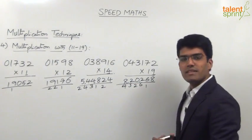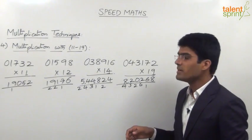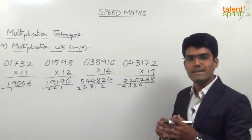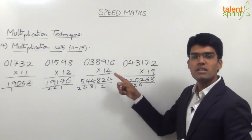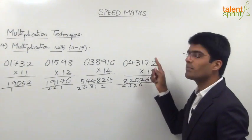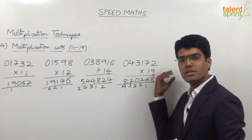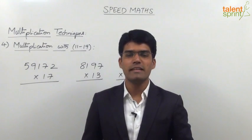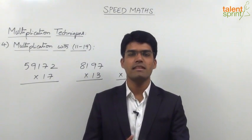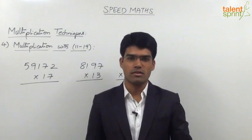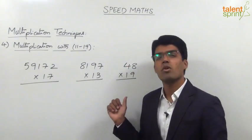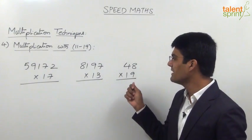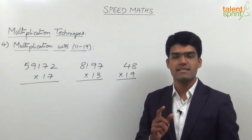Friends, as you can see from these examples, multiplication of numbers with 11 to 19 is a very simple procedure. In each step, we multiply the units digit of the multiplier with the digits of the given number one by one, and add the previous digit of the given number to get the answer. After learning multiplication with 11 to 19, let's now see whether you have really understood that. Here comes the test — we have 3 examples where you have to multiply numbers with 17, 13, and 19.